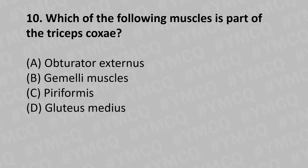Moving to our tenth question: which of the following muscles is a part of triceps coxae? Option A: obturator externus, Option B: gemellus muscle, Option C: piriformis, Option D: gluteus medius. And the answer is Option B: gemellus muscle.